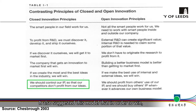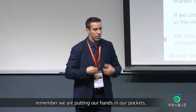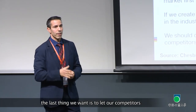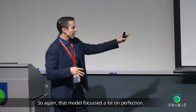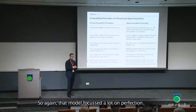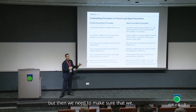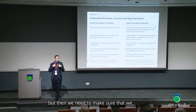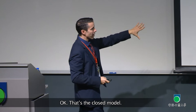The closed model also suggests that in order to win, you have to control your IP. If you develop a technology yourself — spending money from your own pocket — the last thing you want is for competitors to benefit from it. So the closed model focused a lot on protection. You need to create value through technology, but then ensure that you, and not your competitors, capture that value. That's the closed model.